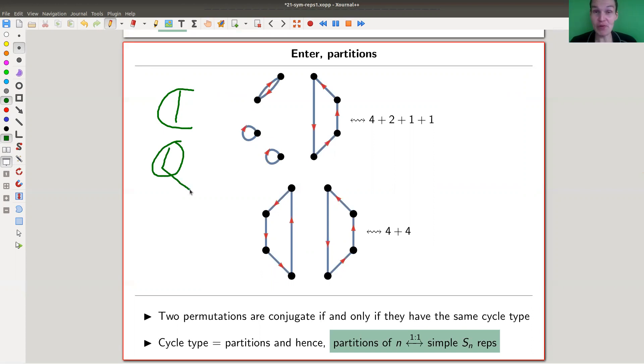So over a reasonable field, the conjugacy classes of the symmetric group are in one-to-one correspondence with the simple representations. So the first task we would like to do is to just label the conjugacy classes in some nice way. And it turns out that this is really simple. So two permutations are conjugate if and only if they have the same cycle type.